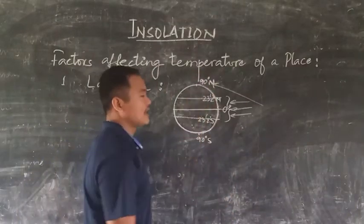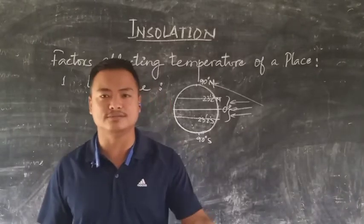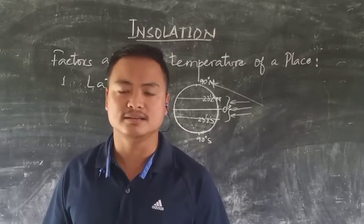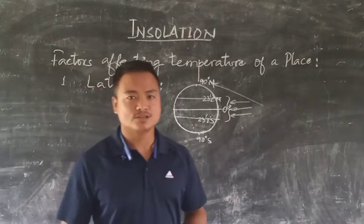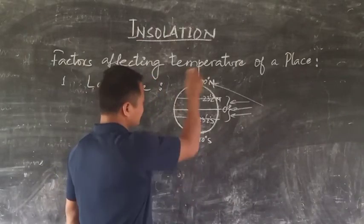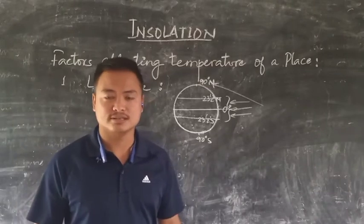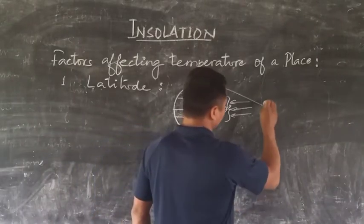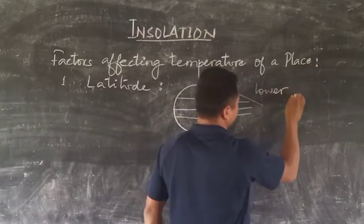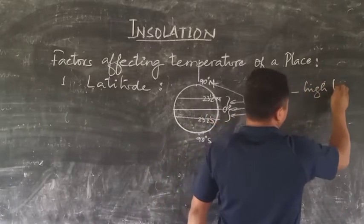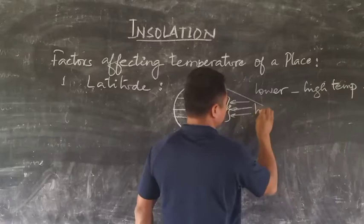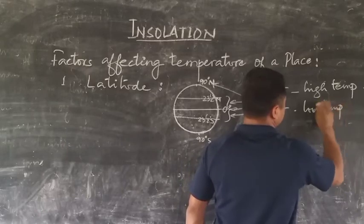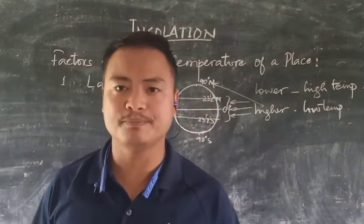Higher latitudes, around 66.5 degrees north and above until 90 degrees, receive slanted rays of the sun, so the heat and insolation received there is minimum. This is the latitudinal factor — temperature changes with latitude. To sum up: lower latitudes have high temperature and higher latitudes have low temperature.